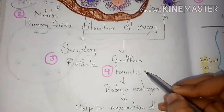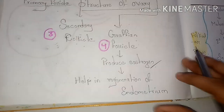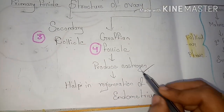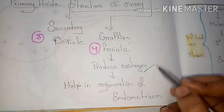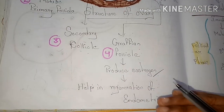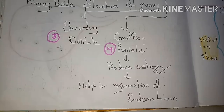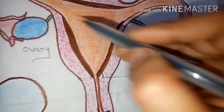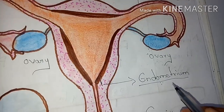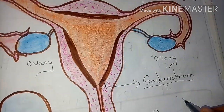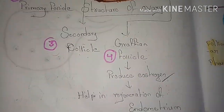When the Graafian follicle is formed in the ovary, it produces the estrogen hormone. This estrogen helps the endometrium — which is present at the lining of the uterus — to regenerate and reform. The endometrium at the walls of the uterus is regenerated by the release of estrogen from the Graafian follicle.